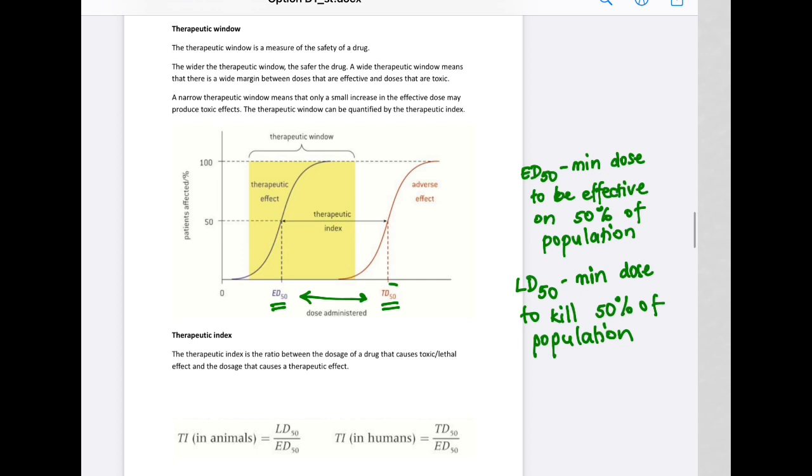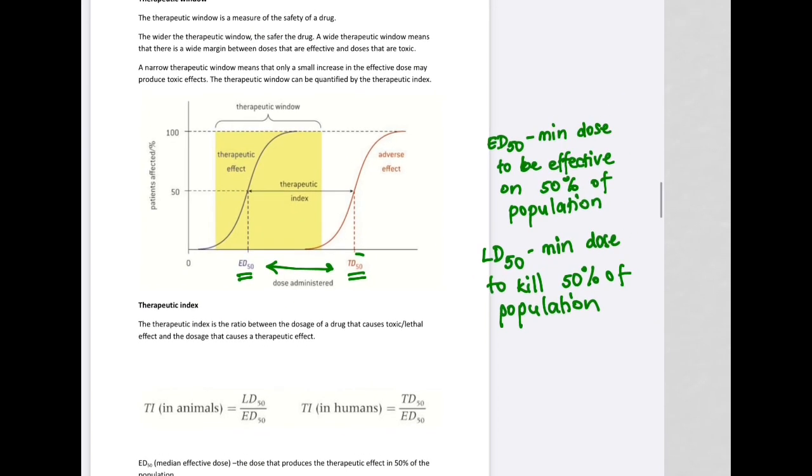So once we have this, we can move on to human trials. In human trials, we are again going to be looking at the effective dose, but we are not going to be concerned about the lethal dose because we're not going to try to kill 50% of the population. But we'll be looking at the toxic dose, TD50.